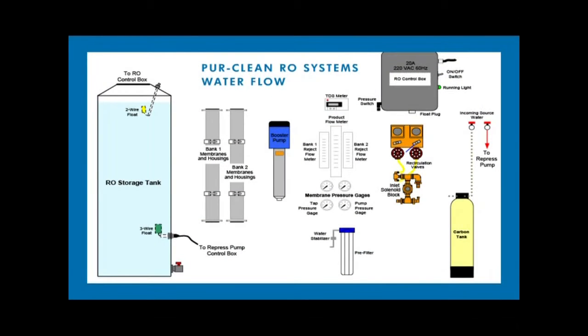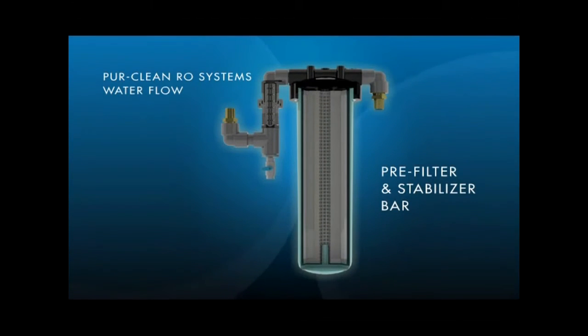Next, the water leaves the carbon media and goes through the inlet solenoid manifold, then proceeds to the pre-filter. Here, the water loses particles, dirt, and minerals larger than 5 microns and proceeds to the stabilizer bar.